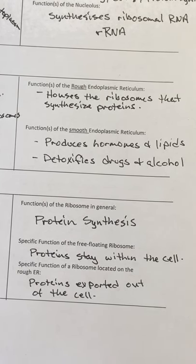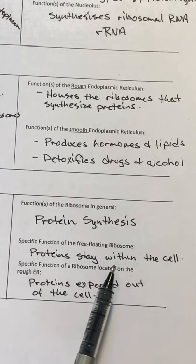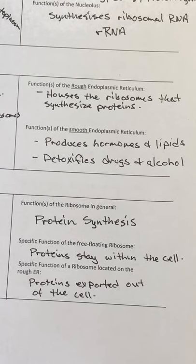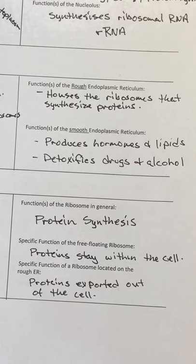The proteins that are made at the ribosomes on the surface of the rough ER are actually exported out of the cell. Examples of these types of proteins would be like the proteins released into the lumen of the small intestine to help break down organic molecules and food. These types of proteins could also be used for a variety of structural or functional proteins within the cell. We'll take a break there and come back to finish the second half of worksheet two.